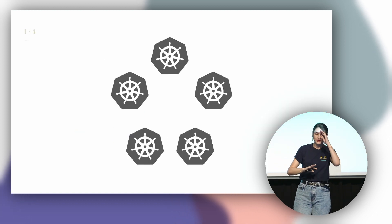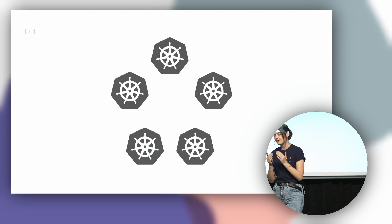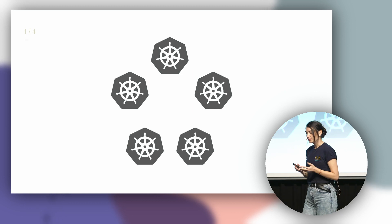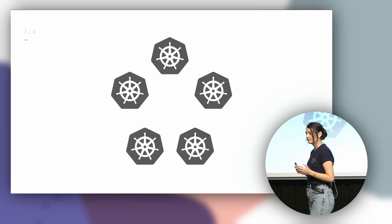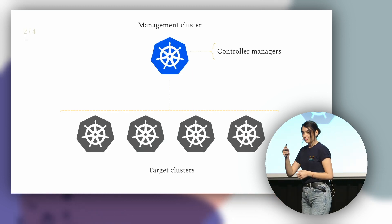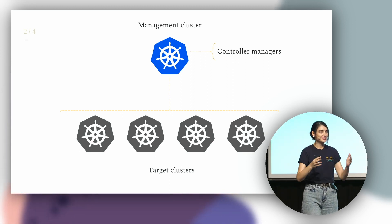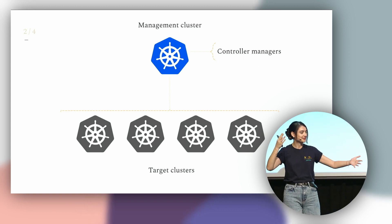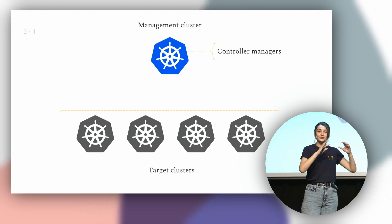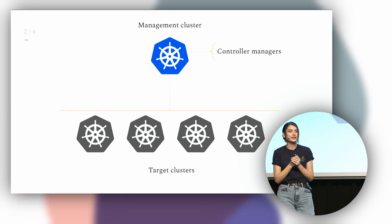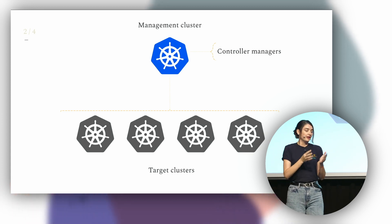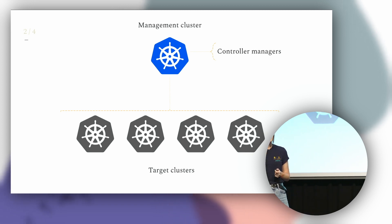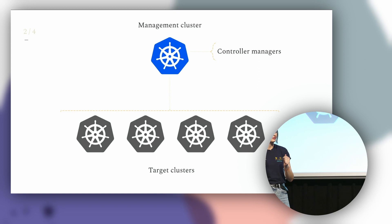For anyone new to Cluster API, I'd like to provide a fundamental understanding of how it works. Suppose you'd like to deploy multiple clusters to different regions and cloud providers. The first thing you'll need is a management cluster. This is something I call kubesception — you need a Kubernetes cluster to deploy more Kubernetes clusters. For testing purposes, it's recommended to use Kind, which is a dockerized version of Kubernetes. However, if you want to use Cluster API in production, it is recommended to use a fully-fledged cluster, mainly because it comes with a more sophisticated failover strategy.